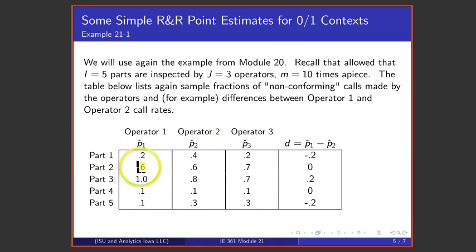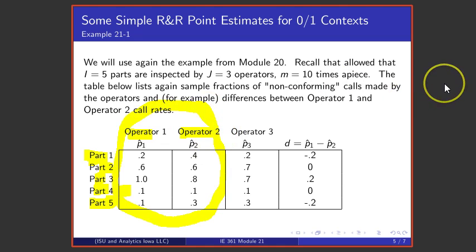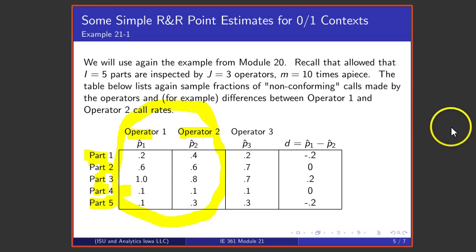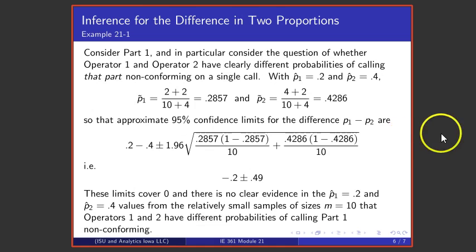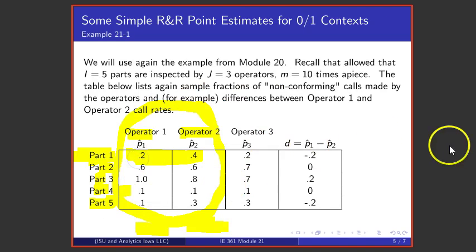In that data we had five parts and three operators, but for our purposes here we're going to pay attention only to operators one and two. We're going to do two things: compare how operators call part number one, and then compare how operators call parts on average. Considering first just part one, the 20% is based on two non-conforming calls out of ten, and the 40% is based on four non-conforming calls out of ten.